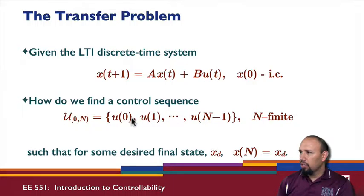So here's our state equation with some initial condition. And so the question is, how do we find a control sequence u? So this is how we define the sequence from 0 to n minus 1, where n is some finite number. How do we find a control sequence that drives us from some initial state x0 to some final state x at time n?